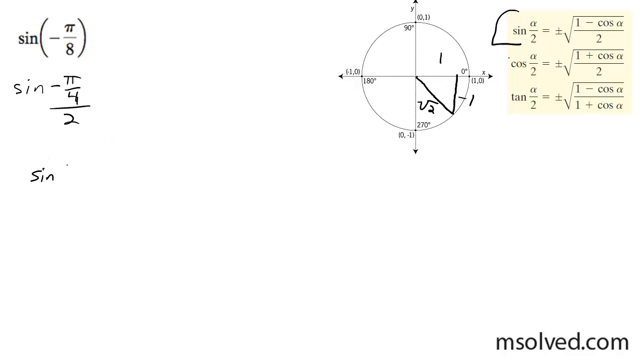So I'm going to write the sine of negative pi over 8. It's going to be equal to negative, because half the angle here, negative pi over 8, is roughly right here. So negative square root of 1 minus the cosine, which is going to be root 2 over 2, divided by 2.